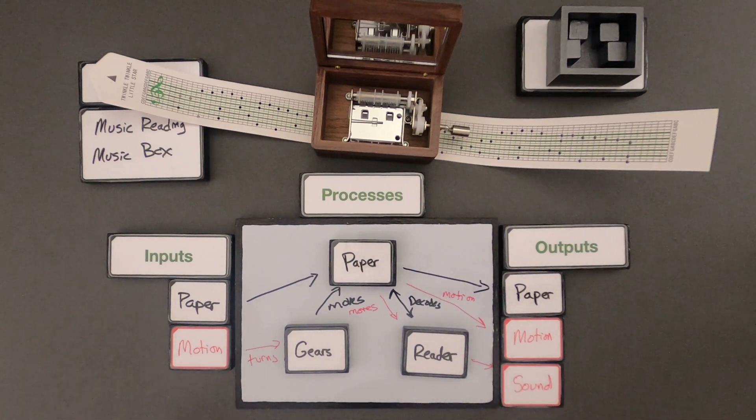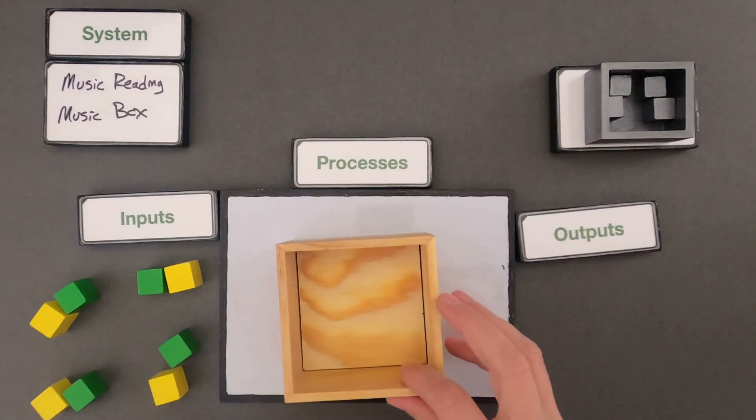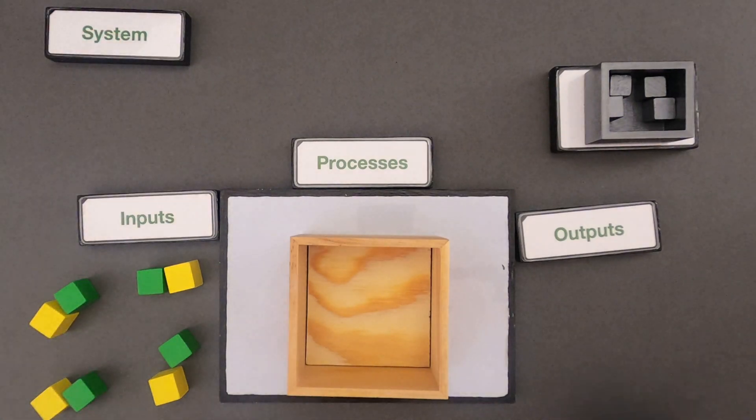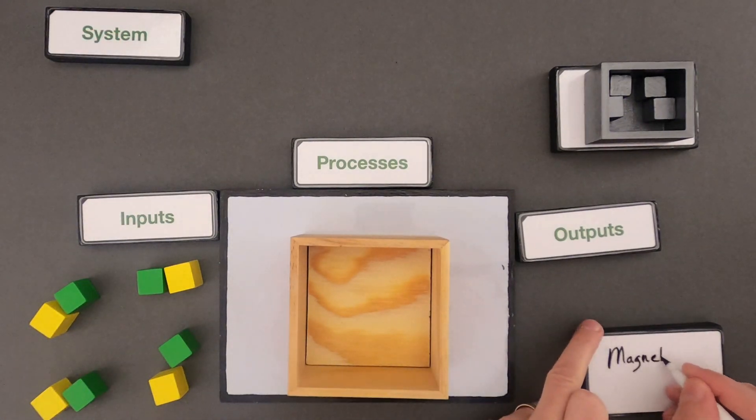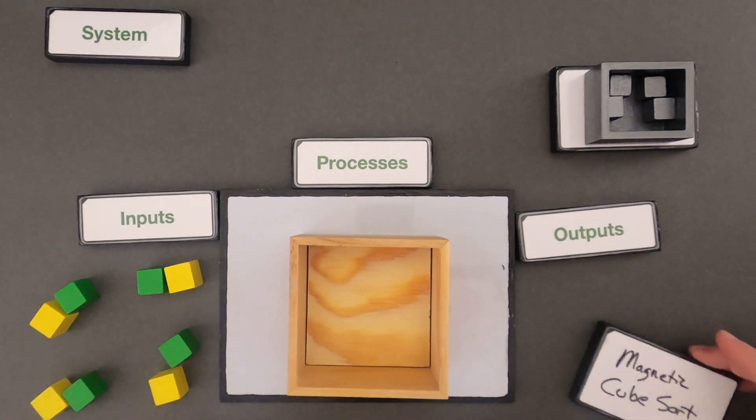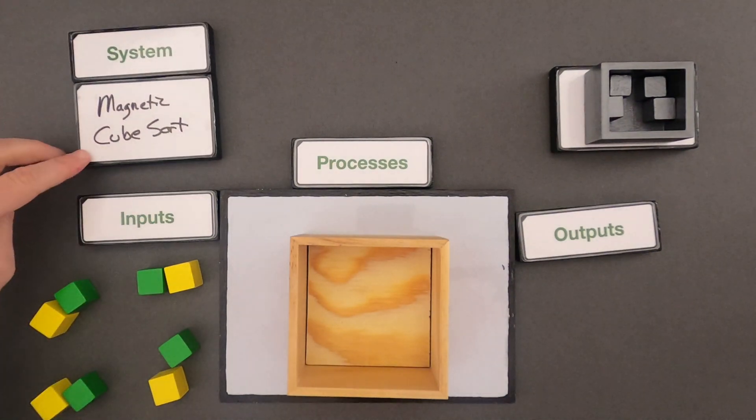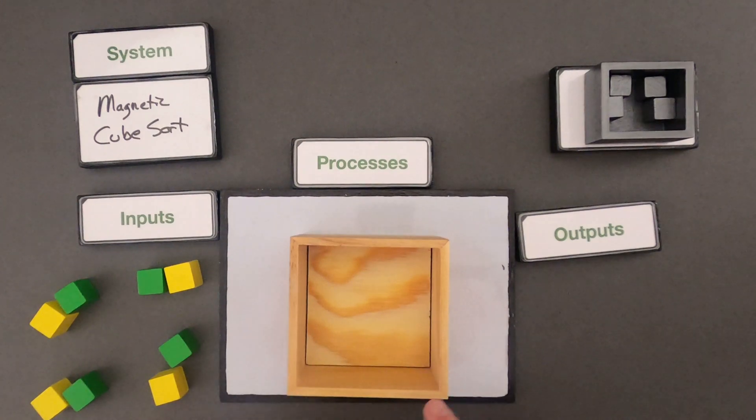What I want to do is clear off the board and then I'm going to give you a different one that you could try. Okay, for the next one I'm going to define the system first. Okay for the next one what we're looking at is the system of this magnetic cube sort that we're going to see here. There's just a wooden box that we have right here.